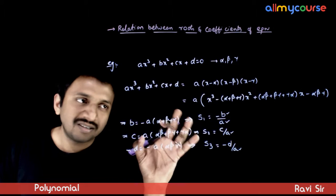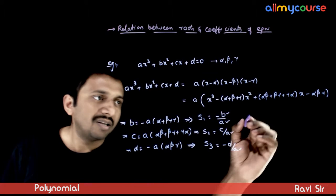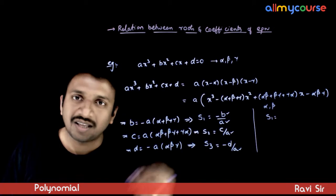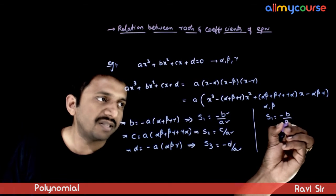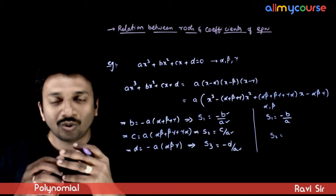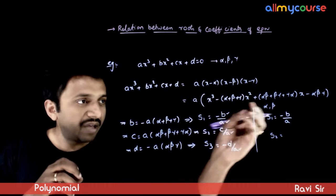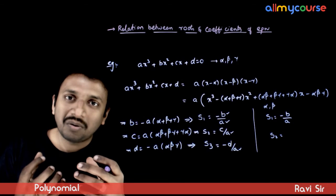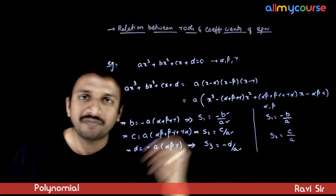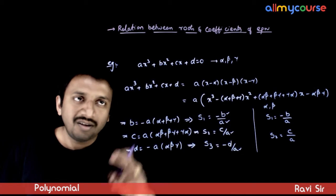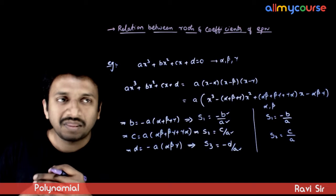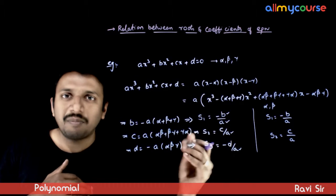This same simplification applies to a quadratic equation. In a quadratic, you have only two roots alpha and beta. So s1 is minus of the second coefficient by the first coefficient, and s2, the sum of products of two roots taken at a time, is just alpha times beta, which equals the next coefficient over a. The alternating signs are: for two roots, minus then plus; for three roots, minus plus minus; for four roots, minus plus minus plus, and so on.